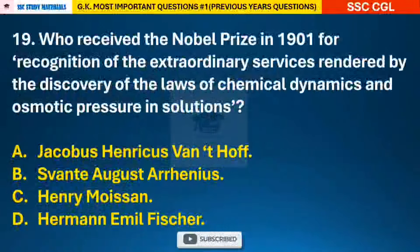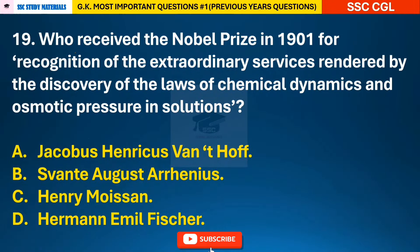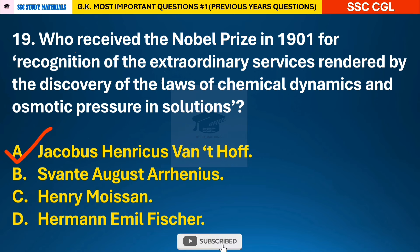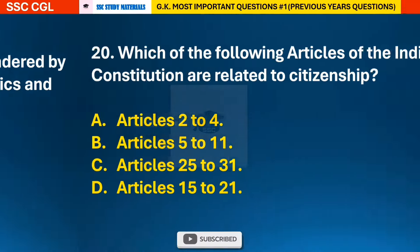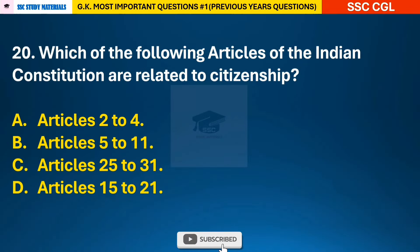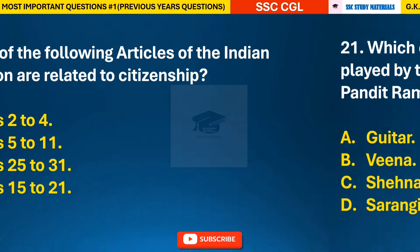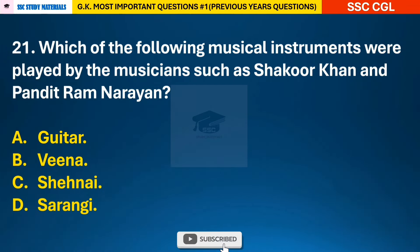Question 19: Who received the Nobel Prize in 1901 for recognition of the extraordinary services rendered by the discovery of the laws of chemical dynamics and osmotic pressure production in solutions? — answer A: Jacobus Henricus van 't Hoff. Question 20: Which articles of the Indian Constitution are related to citizenship? — answer B: Articles 5 to 11.